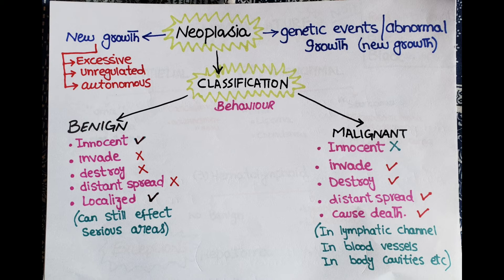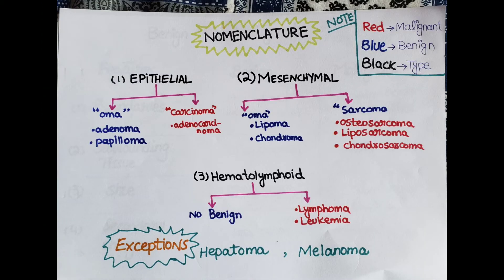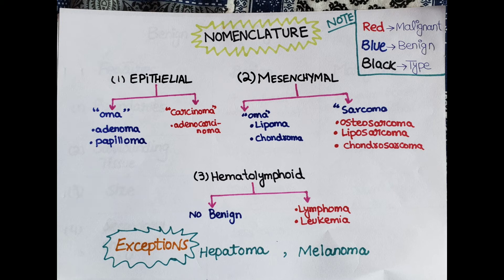Now let's have a quick look at how we name tumors. Tumors are named according to the types of tissues they arise from — epithelial tumors, mesenchymal or soft tissue tumors, bone tumors, and hematolymphoid tumors. For ease, origination of tissues is shown in black, benign tumors in blue, and malignant tumors in red.